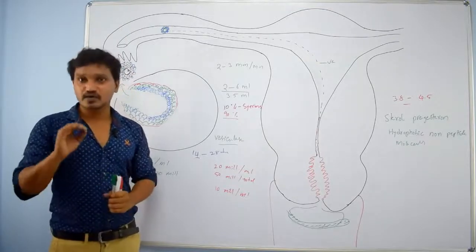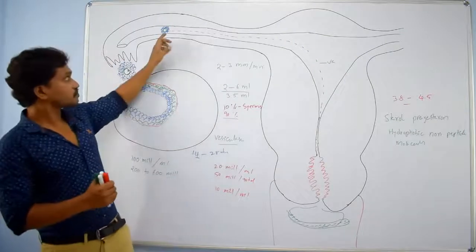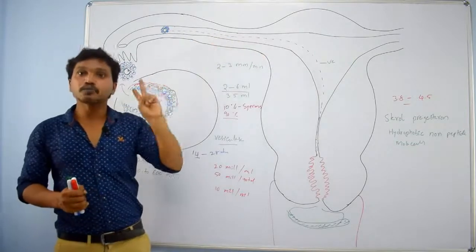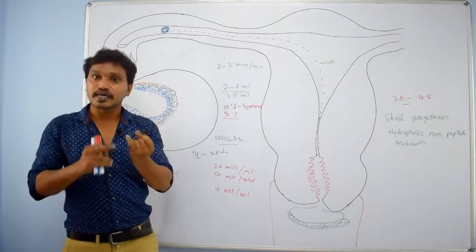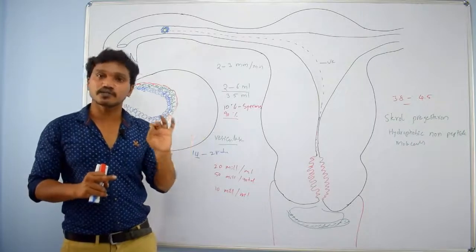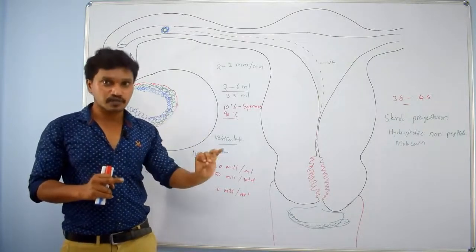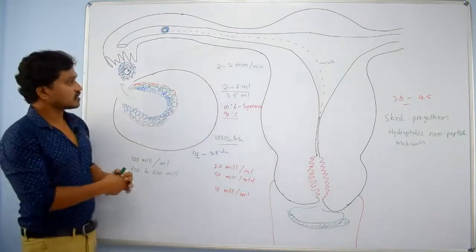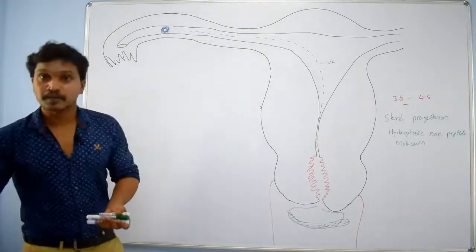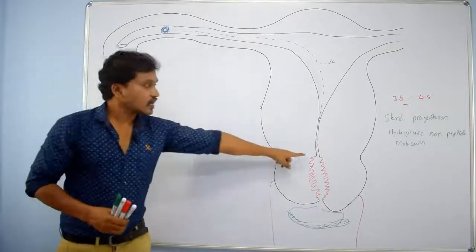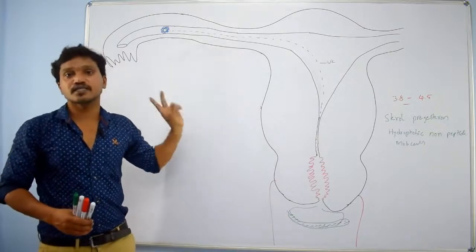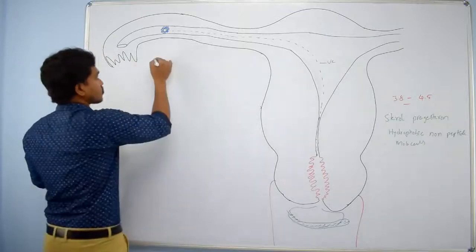When sperms are traveling through the female reproductive tract, two important events happen — the final stages of maturation of sperm. These are capacitation and acrosomal reaction. These occur in the uterine cavity and fallopian tube.